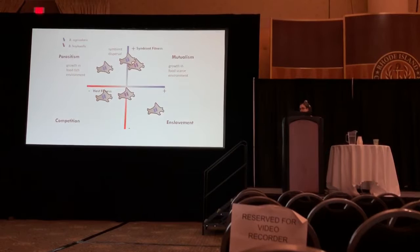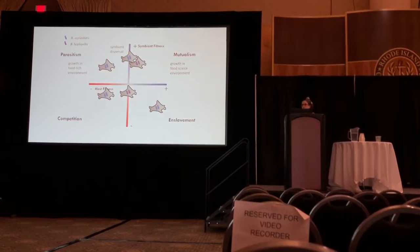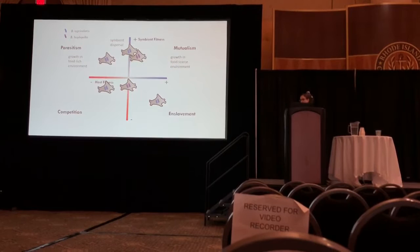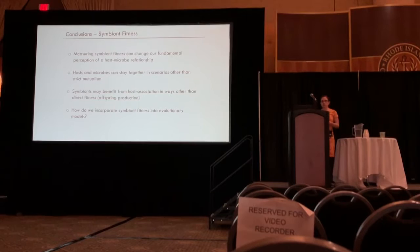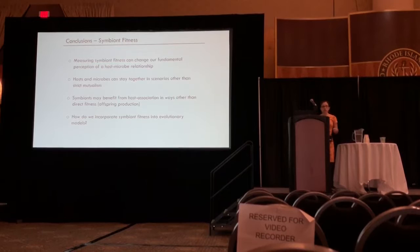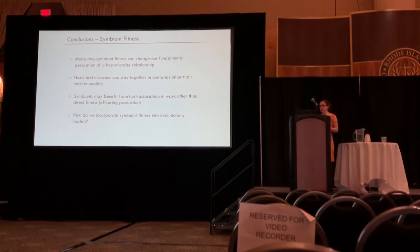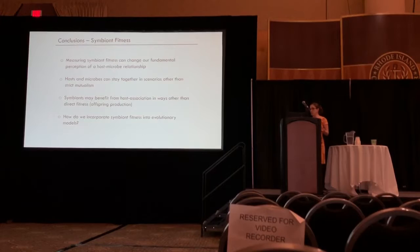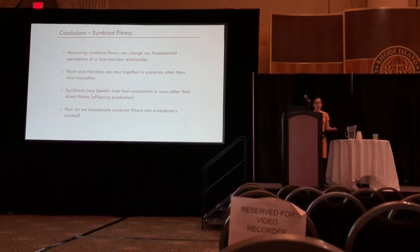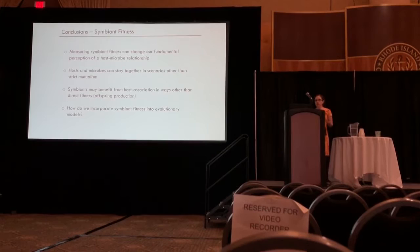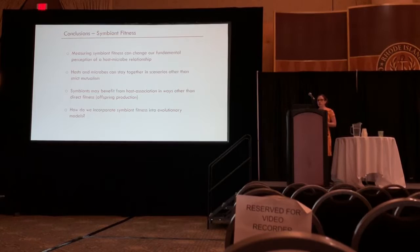I just want to make the case — if nothing else from this talk — that we should think a little wider and incorporate symbiont fitness into our thinking about evolutionary mechanisms and what allows host-microbe interactions to persist. Measuring symbiont fitness really changed the idea of what this interaction was. We saw that partners can stay together under scenarios other than strict mutualism, and we saw different kinds of benefits — population rescue, dispersal — which could reinforce this interaction in different ways. I'd like to start thinking about how we can incorporate these ideas into our evolutionary models for host-microbe interactions.